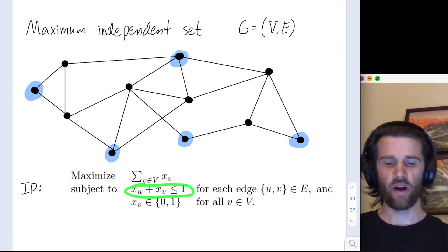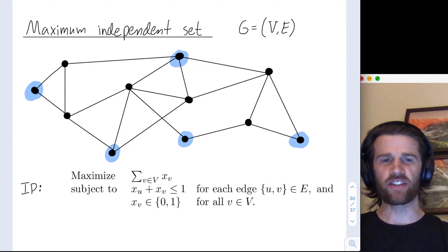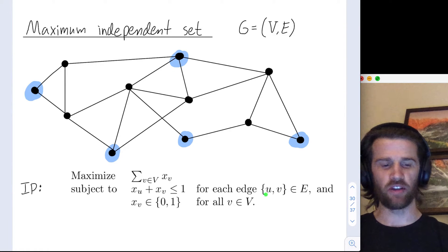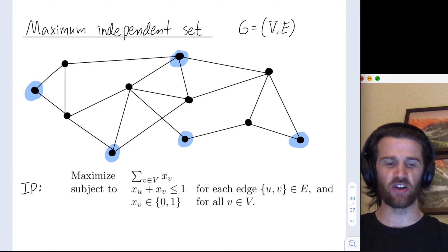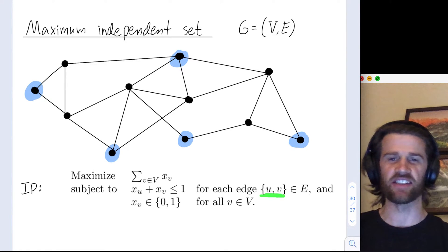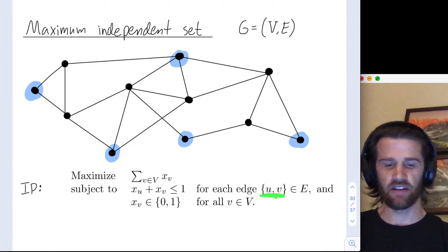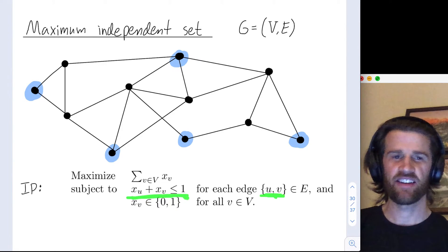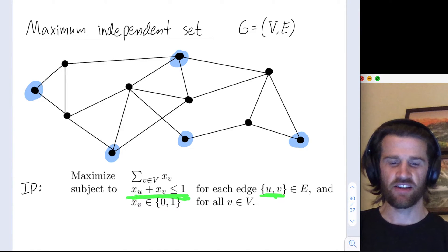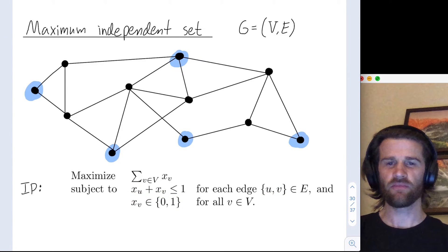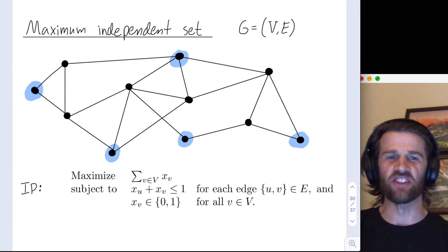We have a constraint where we don't want any two vertices in our set to share an edge. So we look over all edges. For an edge connecting vertices u and v, both endpoints of that edge can't be in our set, because then our set's not independent. A way of encoding that is: you can't have both x_u and x_v be one, because then both vertices would be in your set. So the sum of x_u and x_v has to be at most one. This is our integer linear program.